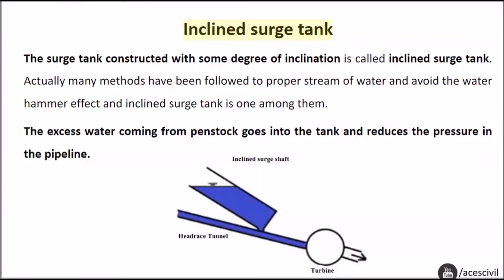Inclined surge tank: The surge tank constructed with some degree of inclination is called an inclined surge tank. Many methods have been followed to ensure proper stream of water and avoid the water hammer effect, and the inclined surge tank is one among them. The excess water coming from the penstock goes into the tank and reduces the pressure in the pipeline.